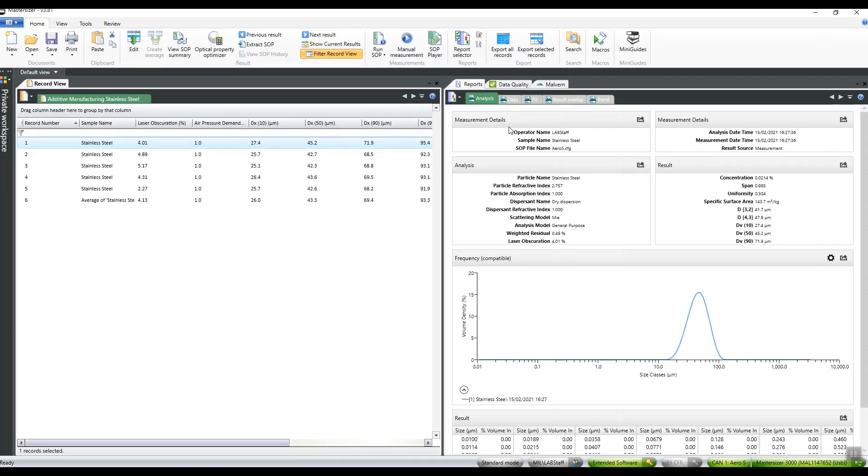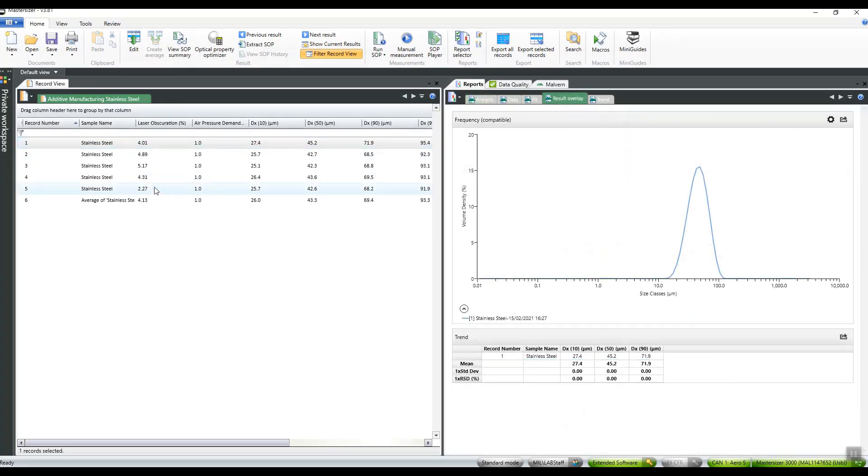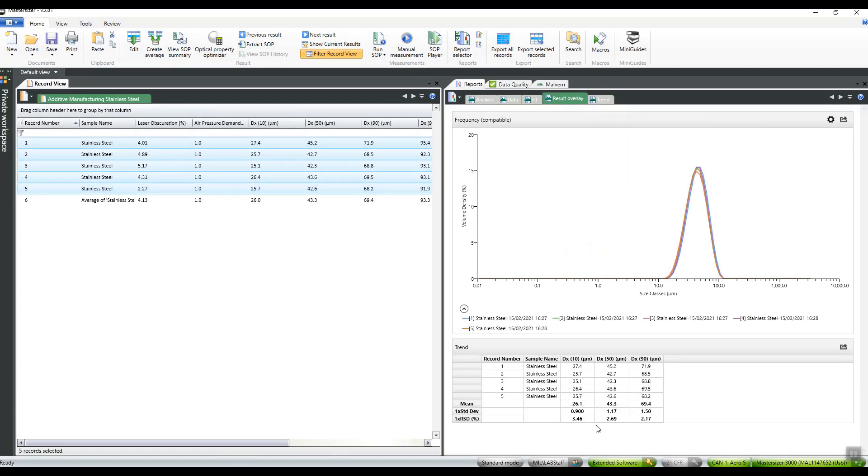Size results can be viewed in different reports, including as overlays and trend graphs, both of which show the variance of measurements by the relative standard deviation percentage values.